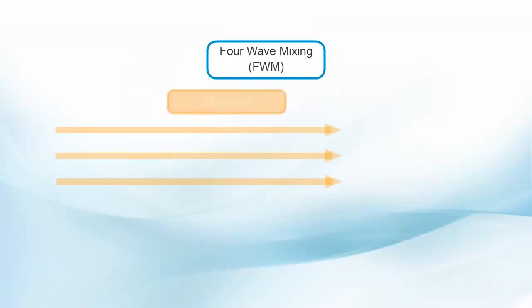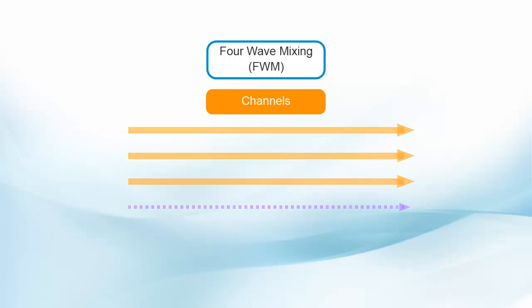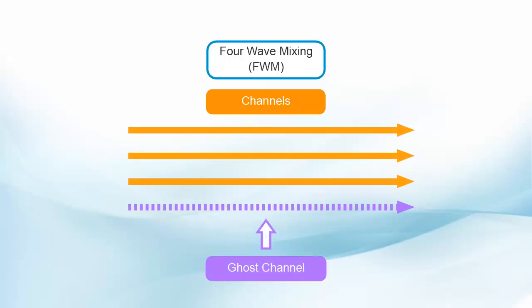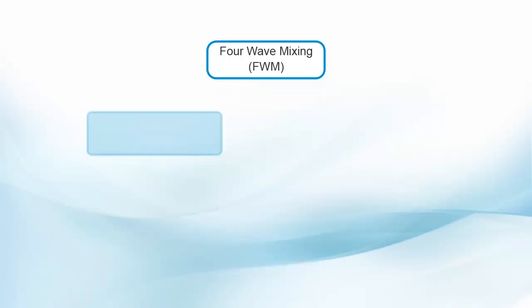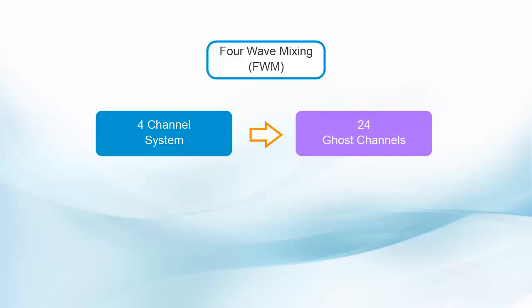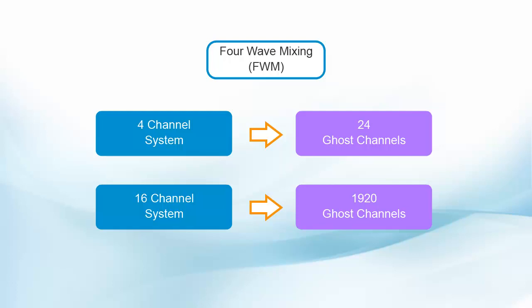Four-wave mixing (FWM) is an interference phenomenon that produces unwanted signals from three signal frequencies known as ghost channels that occur when three different channels induce a fourth channel. There are several ways this can happen, so let's look at two of the most common. Due to high power levels and depending on the number of actual signal channels, FWM effects produce ghost channels, some of which overlap the actual signal channels. For example, a four-channel system will produce 24 and a 16-channel system will produce 1920 unwanted ghost channels.